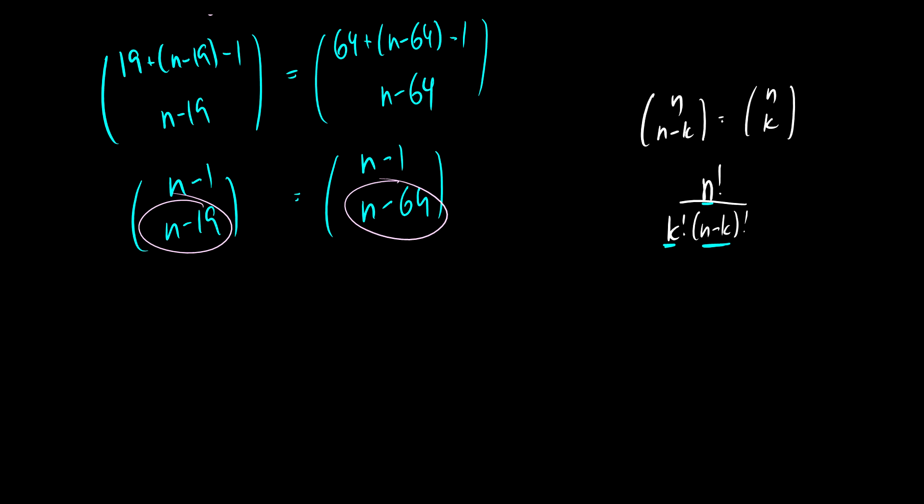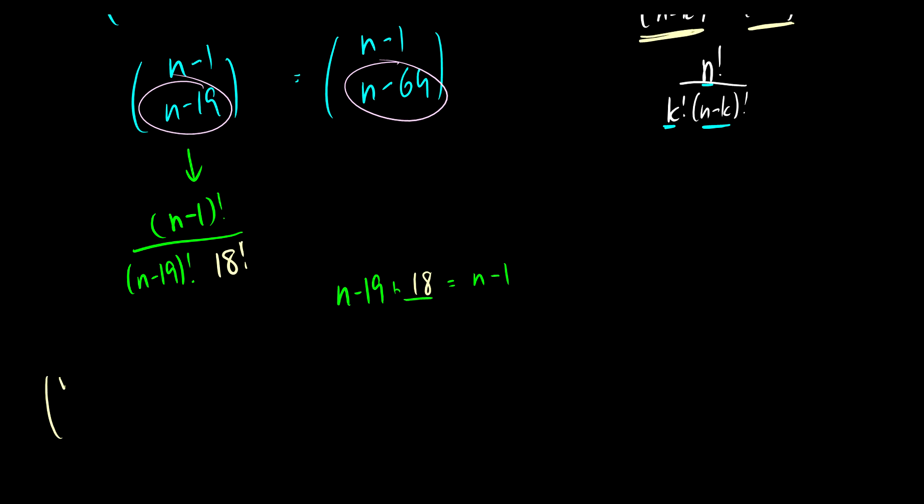So we can use that knowledge and we can take this n minus 1 choose n minus 19 and we can end up with n minus 1 factorial, and of course we have an n minus 19 factorial at the bottom. So what's this remaining number here? Well, n minus 19 plus something has to equal n minus 1. So this something should be 18. So this is going to be an 18 factorial here. And because we know that n choose n minus k is the same as n choose k, we know that this n minus 1 choose n minus 19 is going to be the same thing as n minus 1 choose 18, and this equals n minus 1 choose n minus 64.